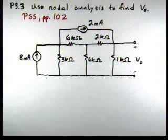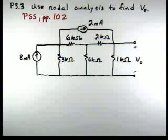Okay, here's problem 3.3 in the problem-solving videos. It says use nodal analysis to find V0. And we'll be relying upon the problem-solving strategy on page 102, which relates to nodal analysis. So here's our circuit. And first thing we notice is that it only contains independent current sources.